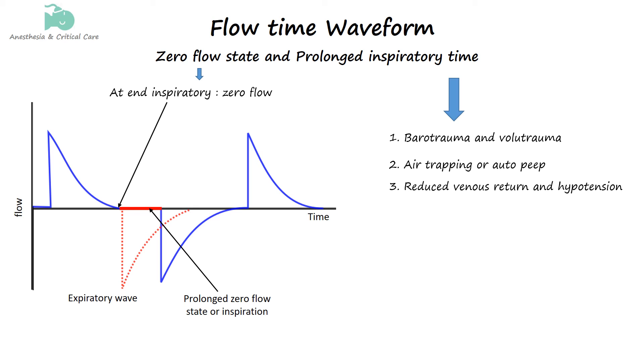Higher mean airway pressures may affect venous return to the heart, leading to decreased cardiac output and hypotension. While prolonged inspiration can enhance oxygenation, it may impair carbon dioxide elimination due to shortened expiratory time.